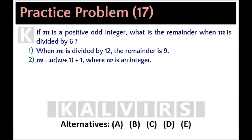If M is a positive odd integer, what is the remainder when M is divided by 6? The question stem states that M is a positive odd integer and they want to know what is the remainder when M is divided by 6.